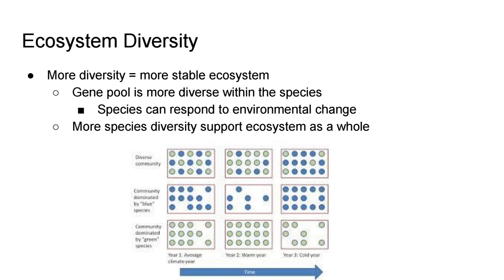Hopefully we've been catching on to this theme: the more diverse things are, the more stable they are, and that applies to ecosystems as well. So the more diversity within the ecosystem, the more stable it is.